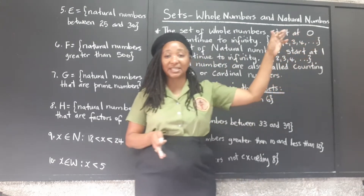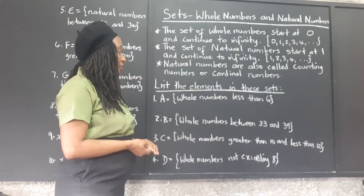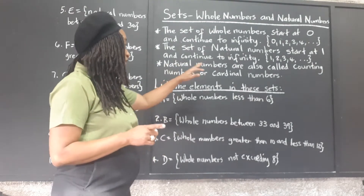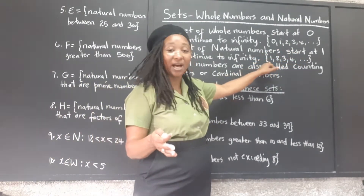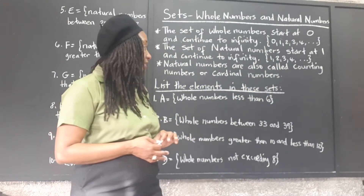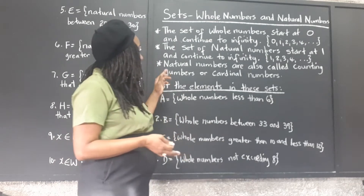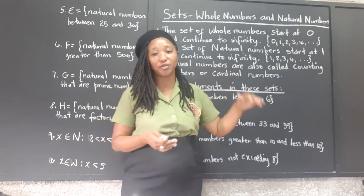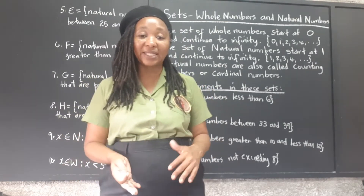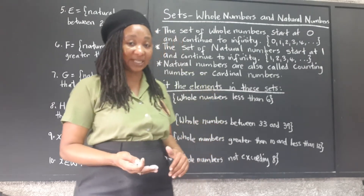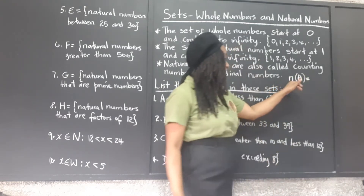The set of natural numbers starts at one and continues to infinity as well — so ellipses indicate infinite continuation. Natural numbers also have a beginning but no end. Natural numbers are also called counting numbers or cardinal numbers; they tell you how many items are there. Whenever we're counting we start at one, so when you count all your items you're getting the cardinality of the set.